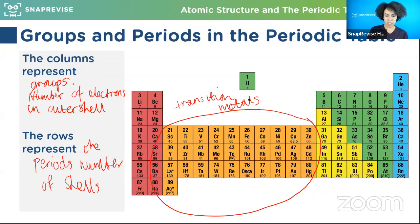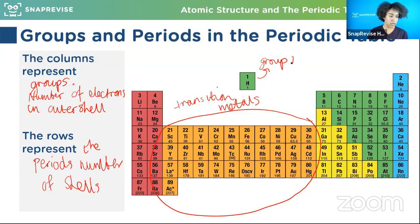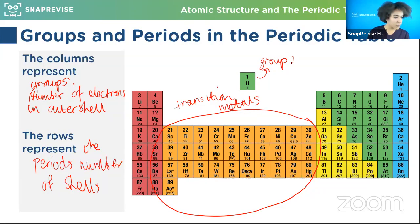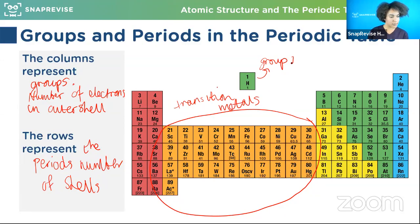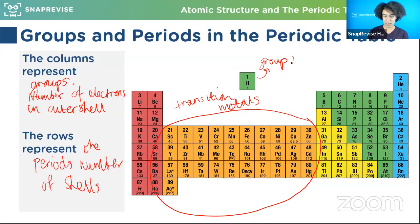One last note: even though hydrogen is floating up the top there, electrons-wise it's in Group 1. It's a bit of a weirdo - hydrogen has lots of really weird things going on because it's so tiny - but it is Group 1. Someone mentions the d-block - we're not quite there yet, but thank you.